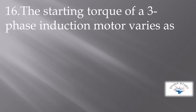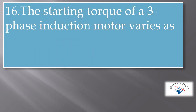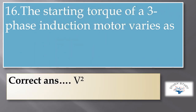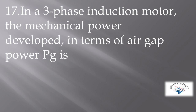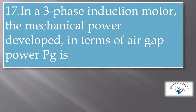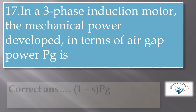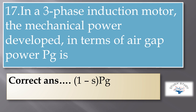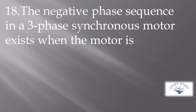The starting torque of a 3-phase induction motor varies as V squared. In a 3-phase induction motor, the mechanical power developed in terms of air gap power Pg is (1 - s) × Pg, where s is equal to slip.